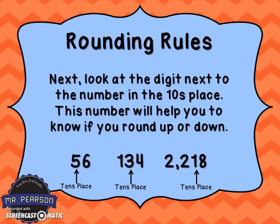Next, what we want to do is look at the digit next to the number in the tens place, or the number that's in the ones place. This number will help you know if you need to round up or round down. In 56, we're going to look at the 6. In 134, we're going to look at the 4. And in 2,218, we're going to look at the 8.